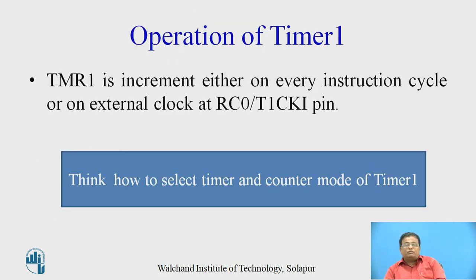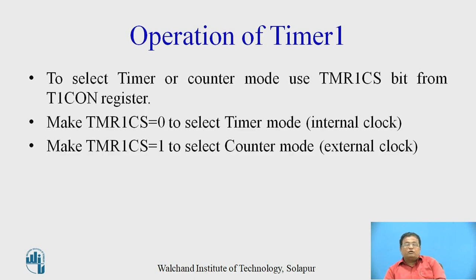Timer 1 increments either on every instruction cycle or on an external clock applied at RC0 (Timer 1 clock input). To select timer or counter mode, use the Timer 1 clock select bit from the Timer 1 control register. For timer mode, set T1CS equal to 0; to operate in counter mode, set the T1CS bit and Timer 1 will operate on external clock.